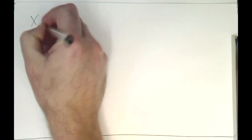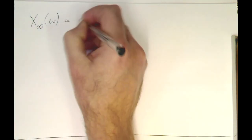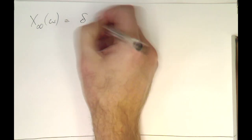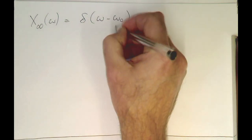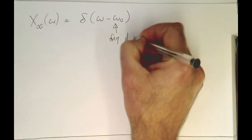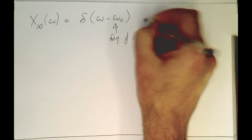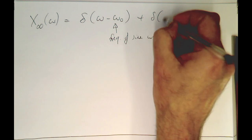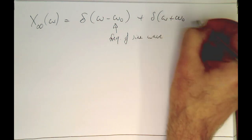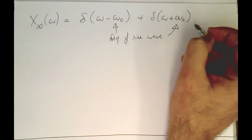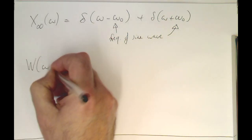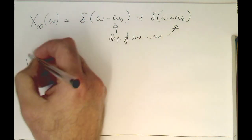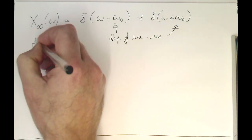The spectrum of x_infinity is simply a delta function: delta at omega minus omega_zero, which is our sine wave frequency. And we should not forget the mirror: delta at omega plus omega_zero. The window w of n is just a rectangular step of length L. Its spectrum can be looked up in Wikipedia or mathematical tables.